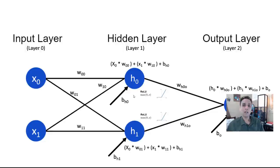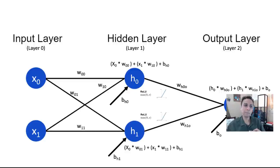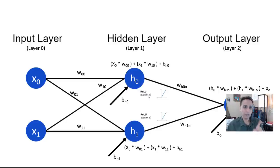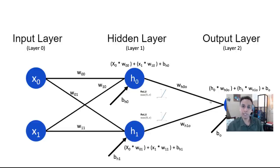If you look at the artificial neural network, this is a very simple case. You have an input layer — in this example, two inputs going in and one output coming out. We have one hidden layer. But the question here is: how many hidden layers do we need? What happens if we remove the hidden layer entirely?